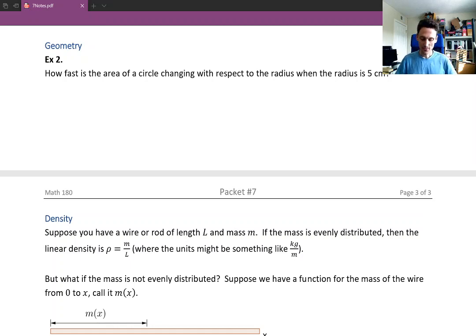Example two says how fast is the area of a circle changing with respect to the radius when the radius is five centimeters? And to start we're going to write the formula for the area of a circle. So can you say what the area of the circle formula is? You said pi r squared? That is correct.